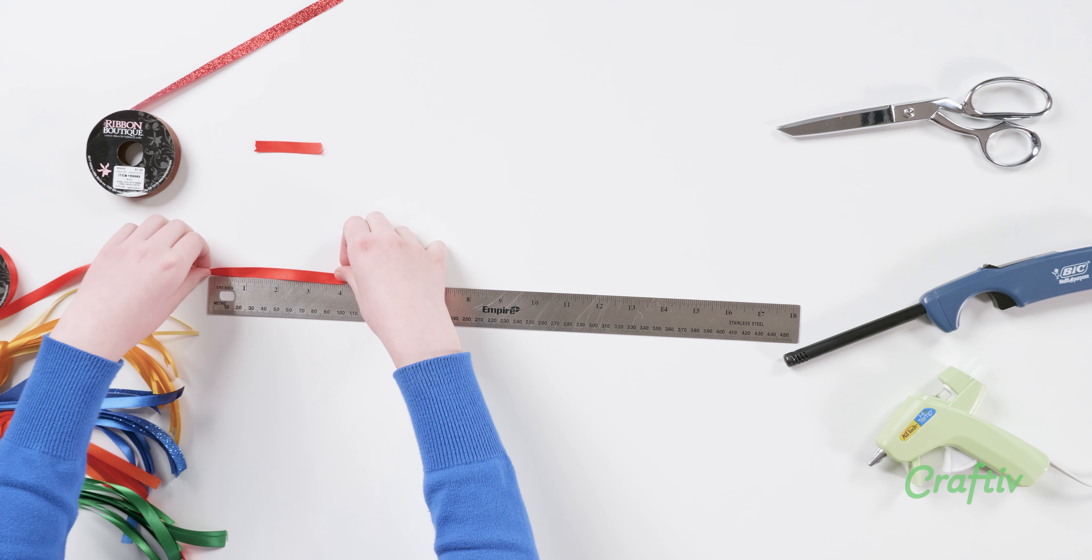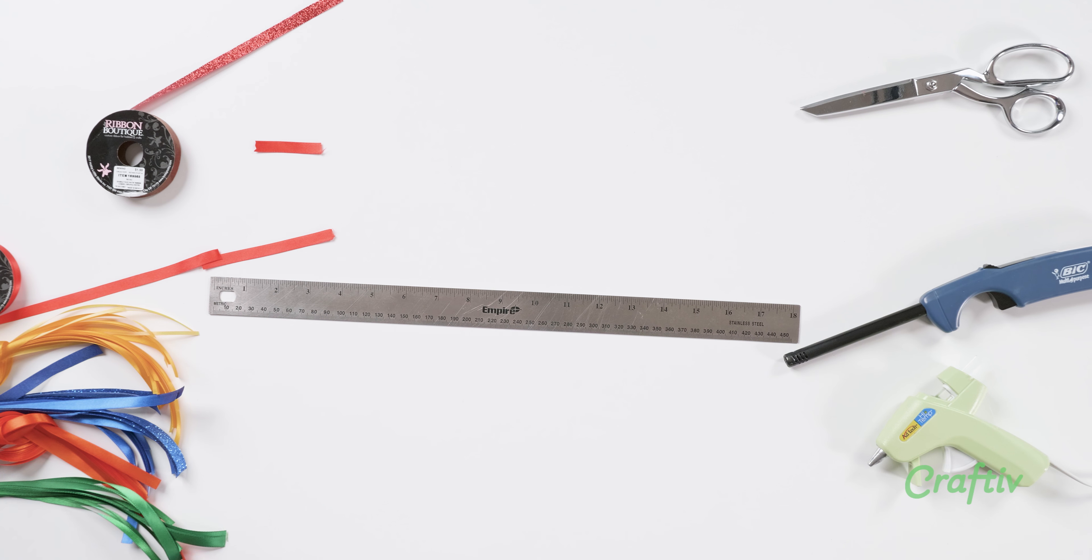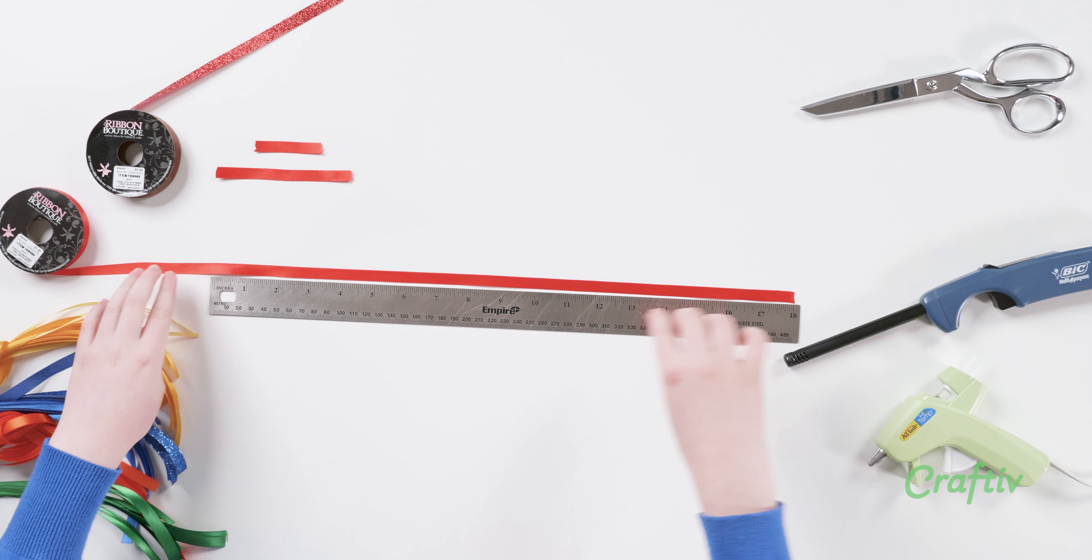Let's start by cutting out one 2 inch and one 4 inch coordinating ribbon piece. These will be used at the end of the project to create a loop that will allow the tassel to hang.